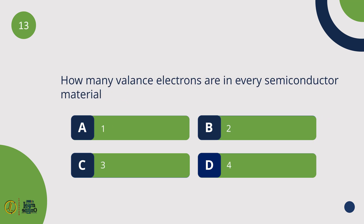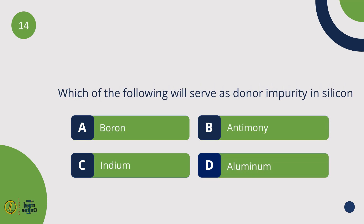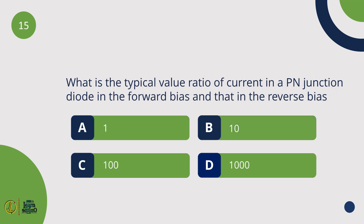How many valence electrons are in every semiconductor material? 4. Which of the following will serve as a donor impurity in silicon? Antimony. What is the typical value ratio of current in a PN junction diode in forward bias to that in reverse bias? 1000.